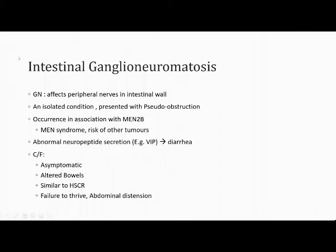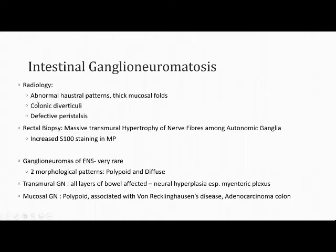Intestinal ganglioneuromatosis involves ganglioneuromas affecting peripheral nerves in the intestinal wall. These are described with MEN syndrome or may occur as an isolated condition, presenting with pseudo-obstruction. Abnormal neuropeptide secretion — for example, vasoactive intestinal peptide — may cause diarrhea, but most are asymptomatic. They can also present similarly to Hirschsprung disease with failure to thrive and abdominal distension. On imaging, abnormal haustra patterns, thickened mucosal folds, and colonic diverticuli are found; on rectal biopsy, massive transmural hypertrophy of nerve fibers with increased S100 staining is seen.